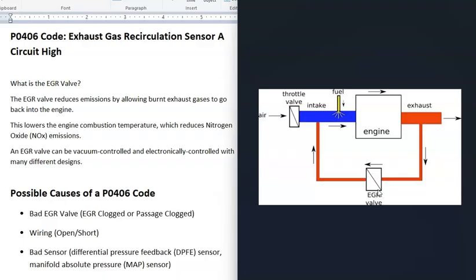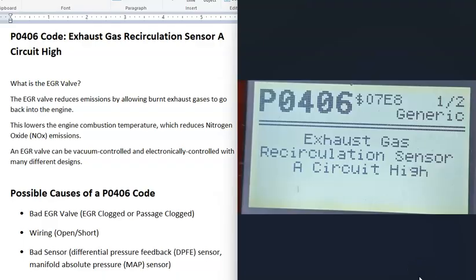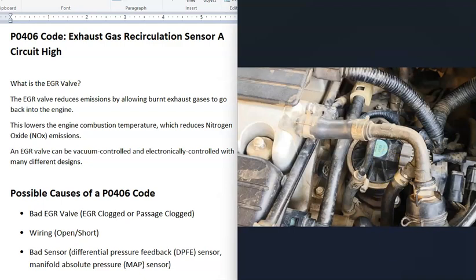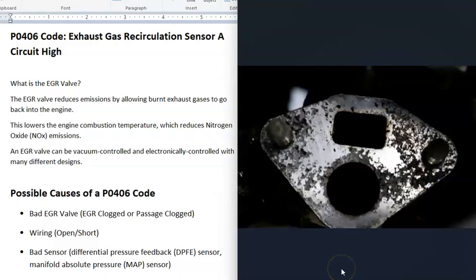What are some possible causes of a P0406 code? The first thing is that the EGR valve has gone bad and needs to be replaced. It's very common for these to get clogged up from exhaust gases, along with the passages going back into the engine.